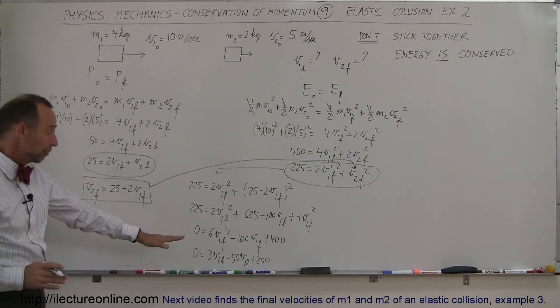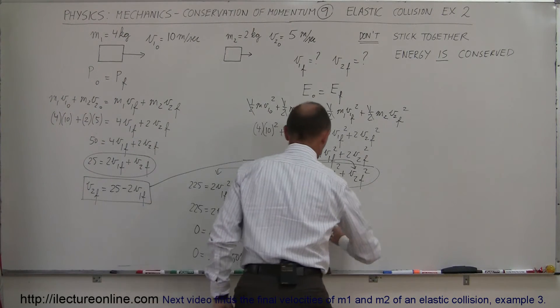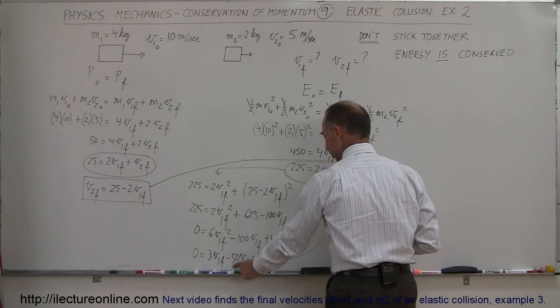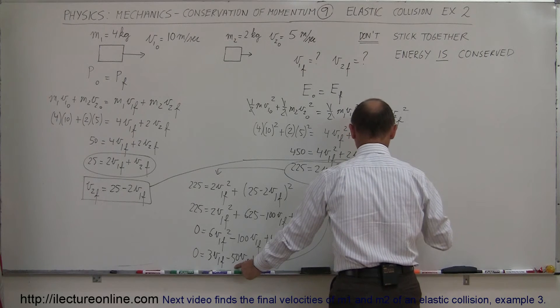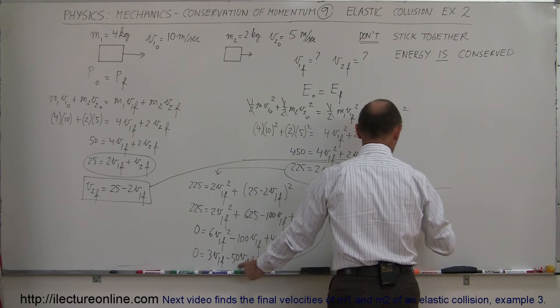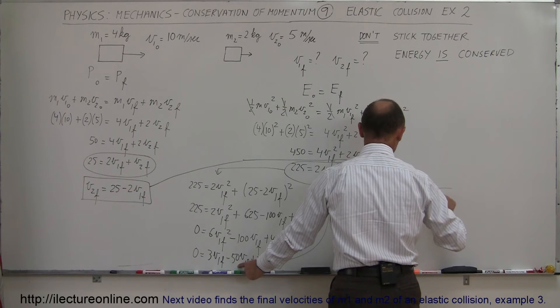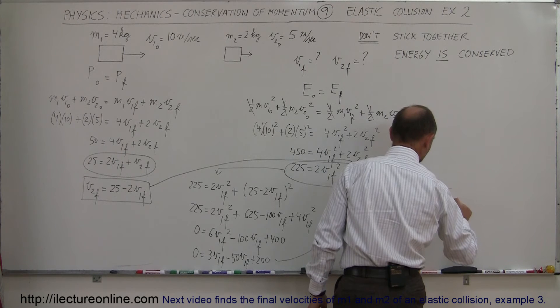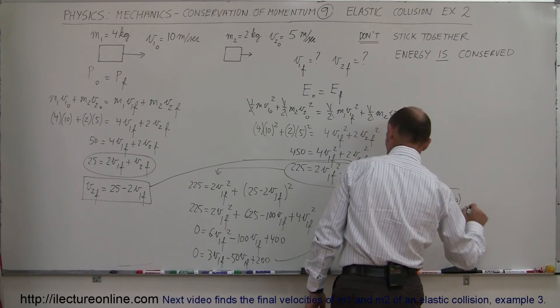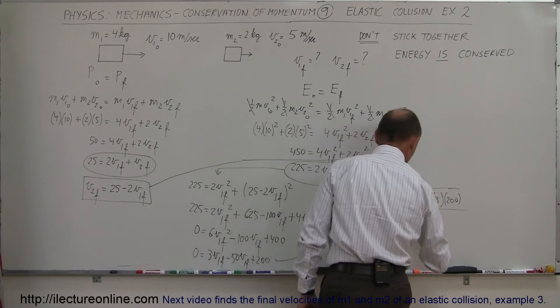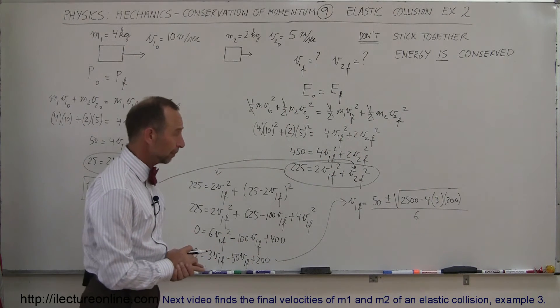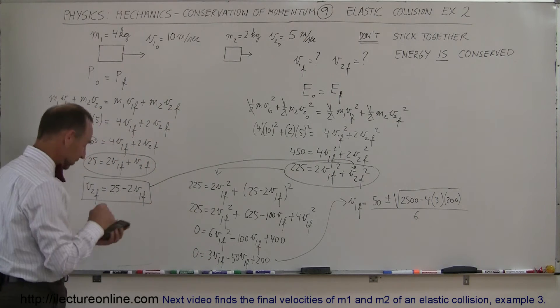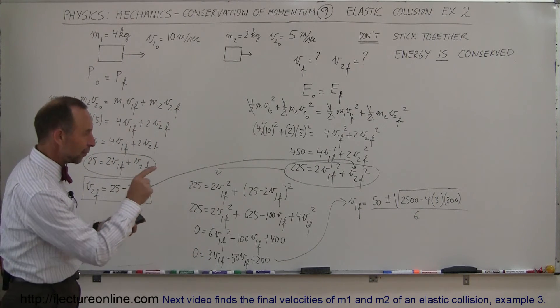Now let's use the quadratic formula to solve for that equation. So we can say then that V1 final is equal to minus B, which is plus 50, plus or minus the square root of B squared, which is 2500, minus 4 times A, which is 3, times C, which is a positive 200. And the whole thing is divided by 2 times A, which is 6. So that's using the quadratic formula. Now, did I bring my calculator? I did not. My pen is here, my calculator is here, I can continue now with that problem.